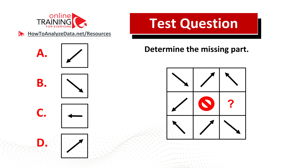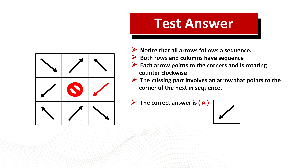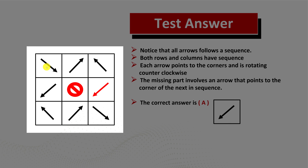Let's continue to see if we can solve this challenge together. To determine the next item in the sequence, we have to look for patterns. Both rows and columns have a sequence. If you look at the bottom row, the arrow points in the bottom right corner, then the upper right corner, then the upper left corner — it rotates counterclockwise. You also see the arrow rotating clockwise in another sequence.